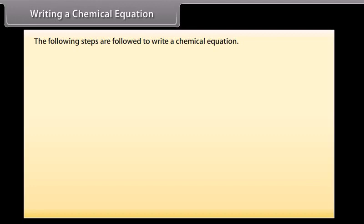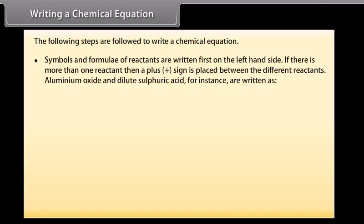The following steps are followed to write a chemical equation. Symbols and formulae of reactants are written first on the left-hand side. If there is more than one reactant, then a plus sign is placed between the different reactants. Aluminum oxide and dilute sulfuric acid, for instance, are written as Al2O3 plus H2SO4.